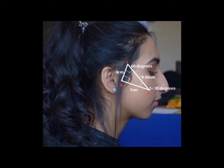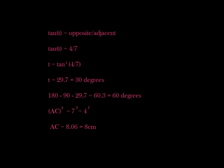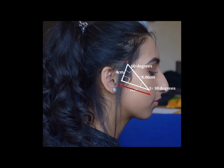The length AC can be found using Pythagoras's theorem, where AC squared is equal to 7 squared plus 4 squared, so AC is approximately 8.06 centimeters. We see the contour line is parallel to the adjacent of the triangle by 0.5 centimeters.